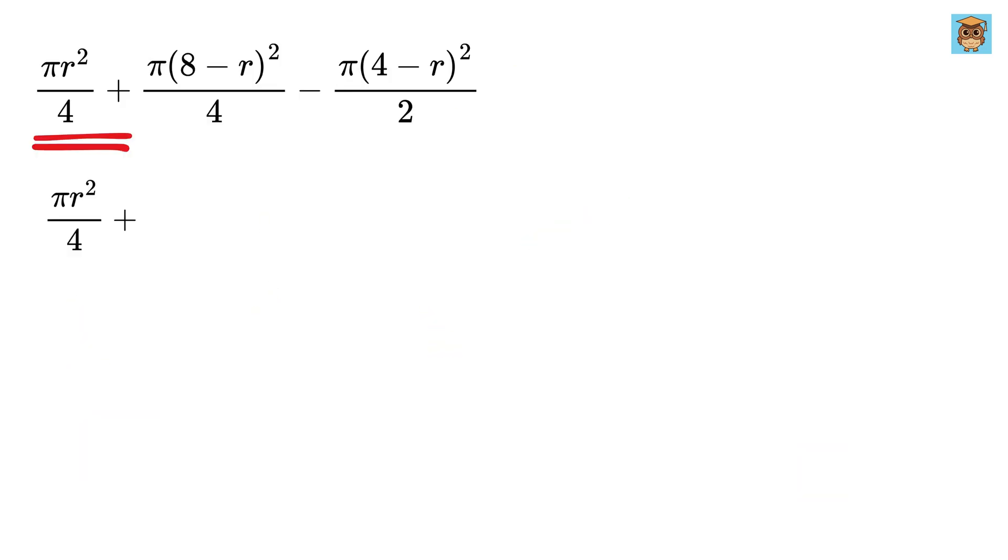Write it as it is. Now, expanding this gives us 64 plus r square minus 2 times 8, or 16 r. Now, expanding this gives us 16 plus r square minus 2 times 4, or 8 r.